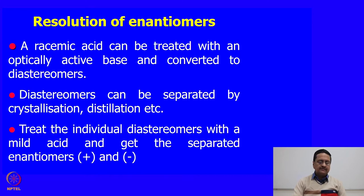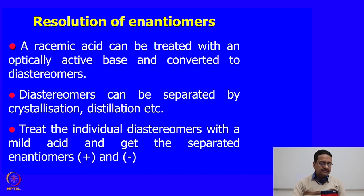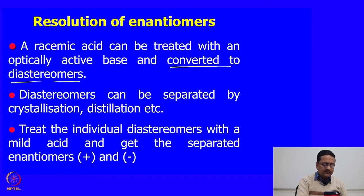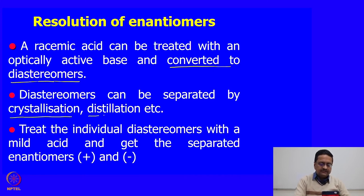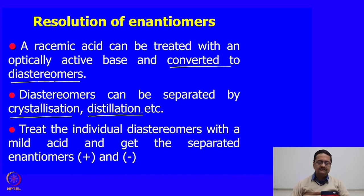When we have a set of different enantiomers in solution, we call it a racemic mixture. Sometimes we may need to isolate the two enantiomers from a given racemic mixture. A racemic acid can be treated with an optically active base to convert it into diastereomers. Diastereomers can then be separated by crystallization and distillation methods, and sometimes by their solubility. Then we treat the individual diastereomers with a mild acid to get the separated enantiomers as plus and minus forms.